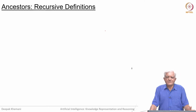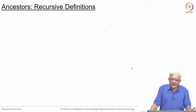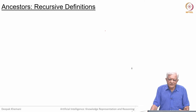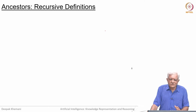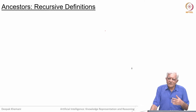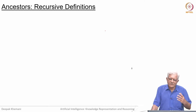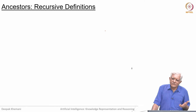Welcome back. We have been defining family relations and we took the approach that we will start with a primitive set of relations and define everything else in terms of those primitives. The primitives we chose were the parent relation — x is a parent of y — and gender: x is male or x is female. With these three kinds of facts, we are defining all kinds of relations that occur in a family, such as brother, sister, aunt, and so on.